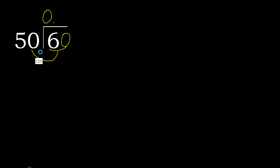60 is not less, therefore work with 60. 50 multiplied by which number is nearest to 60 but not greater? 50 multiplied by 2 is 100 — 100 is greater. Multiply by 1 is 50, which is not greater. Subtract: 10.